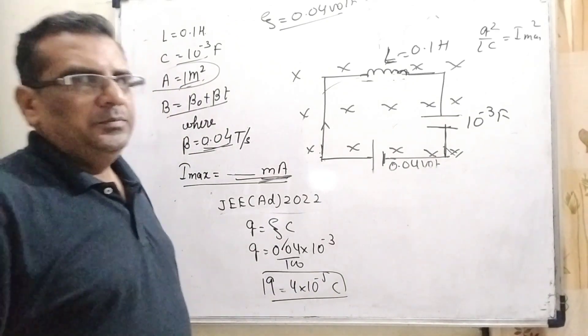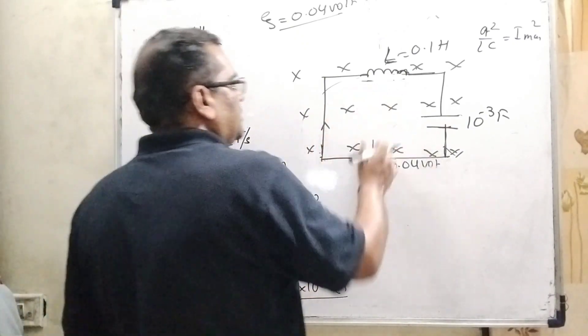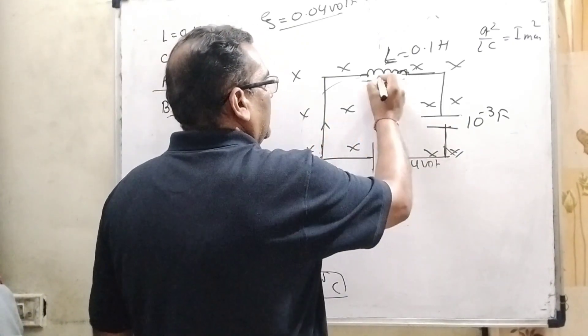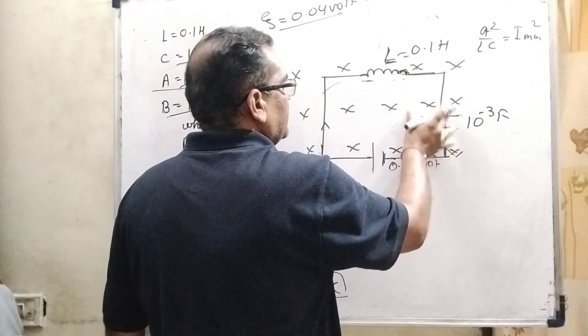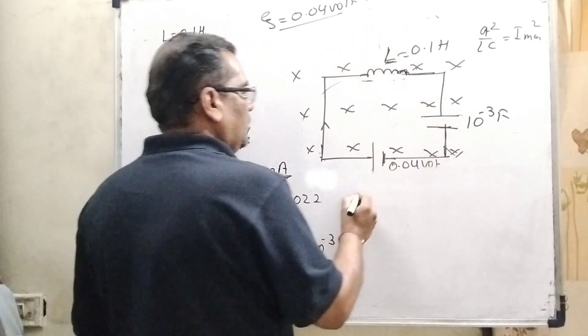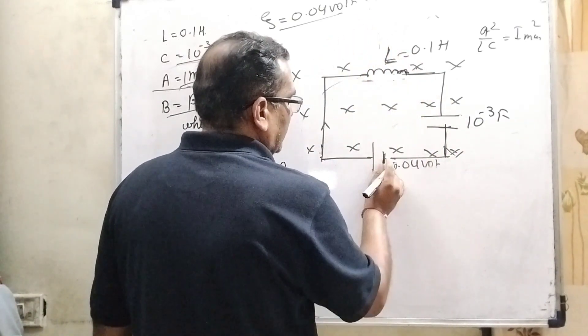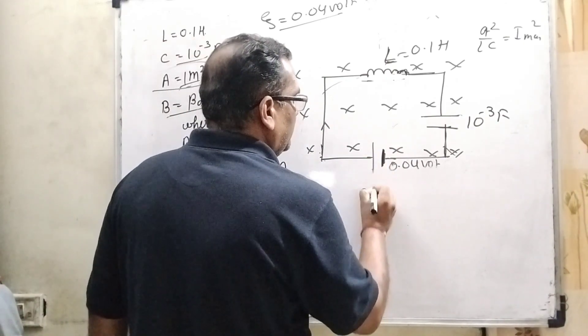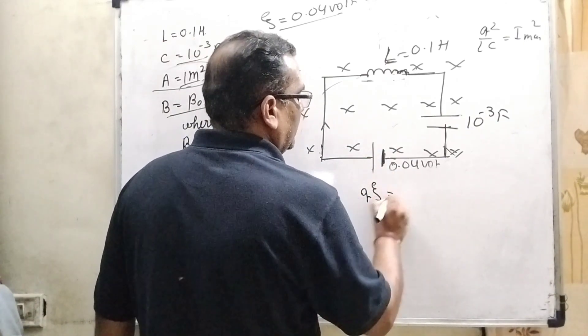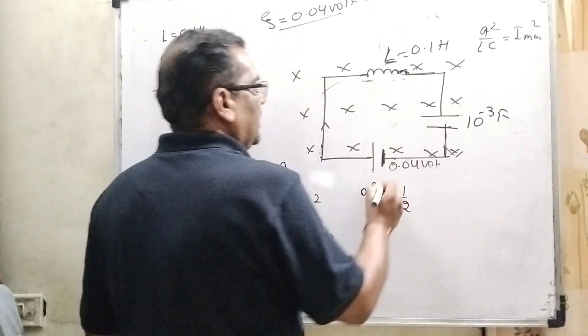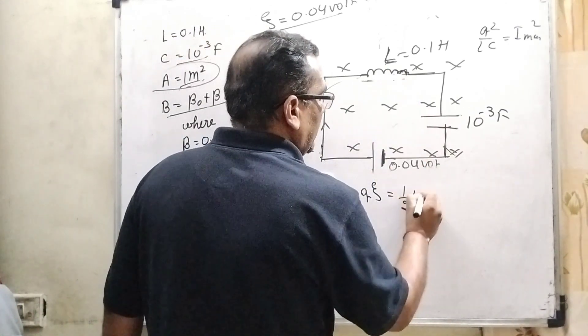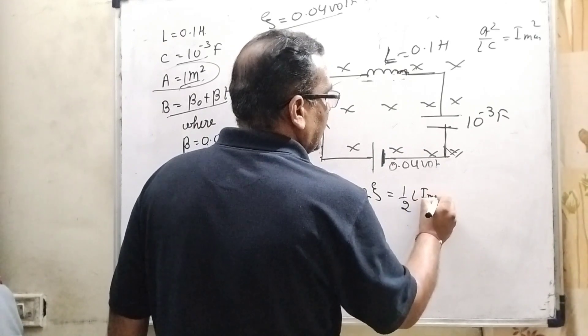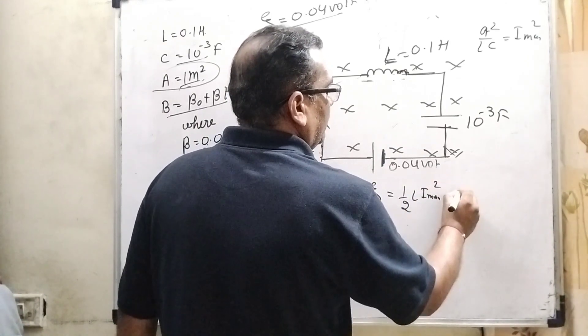Now applying laws of conservation of energy. All energies consist in this capacitor and inductance coil, that is equal to amount of work done by the battery. That is Q into EMF equal to 1 by 2, energy consists in that inductance coil, that is 1 by 2 L I maximum and 1 by 2 Q square by C.